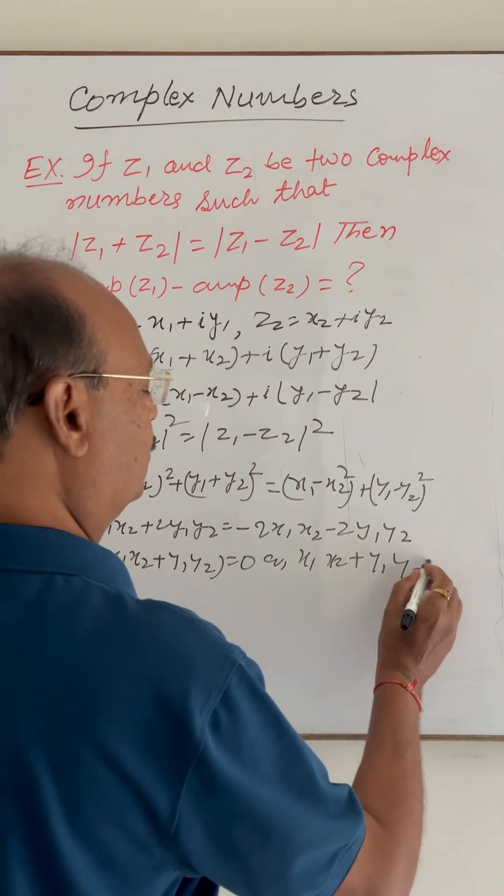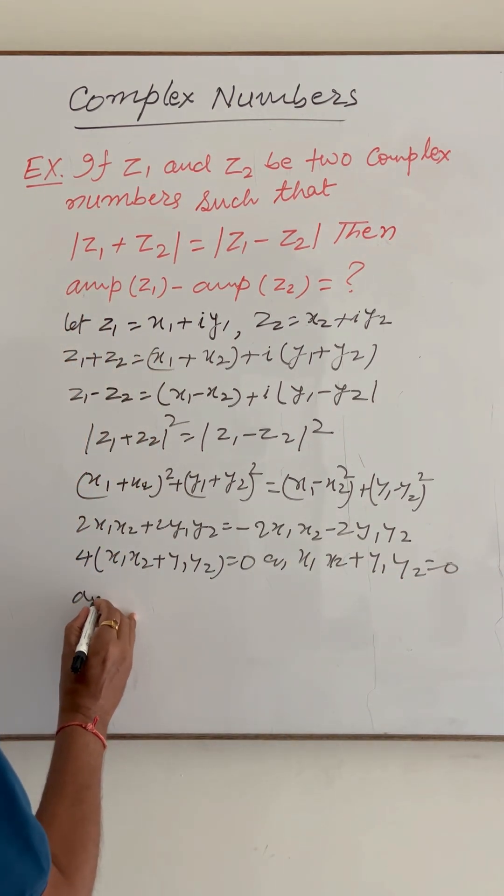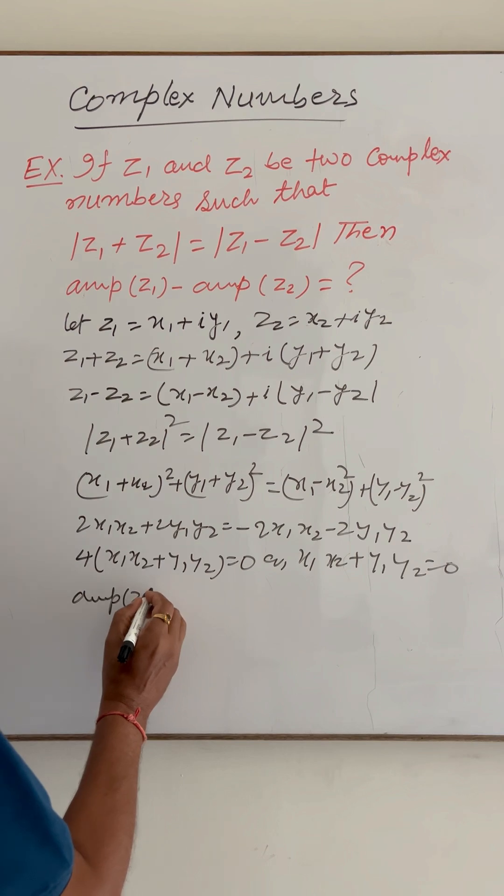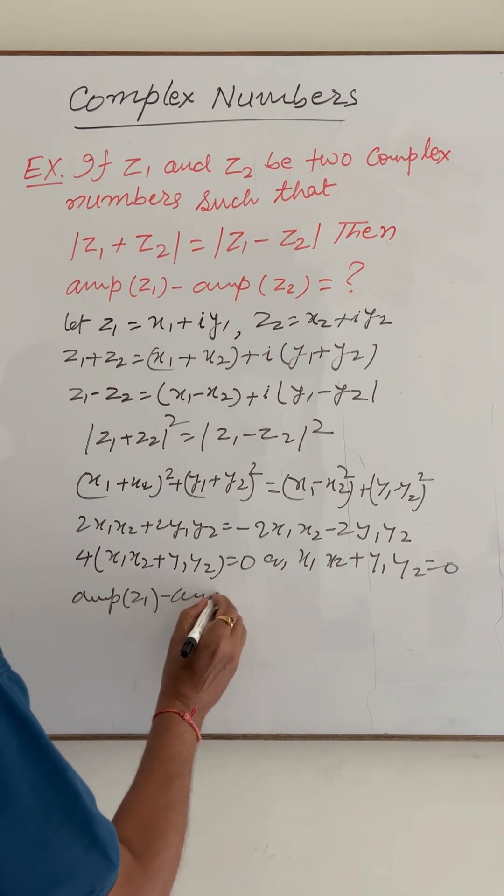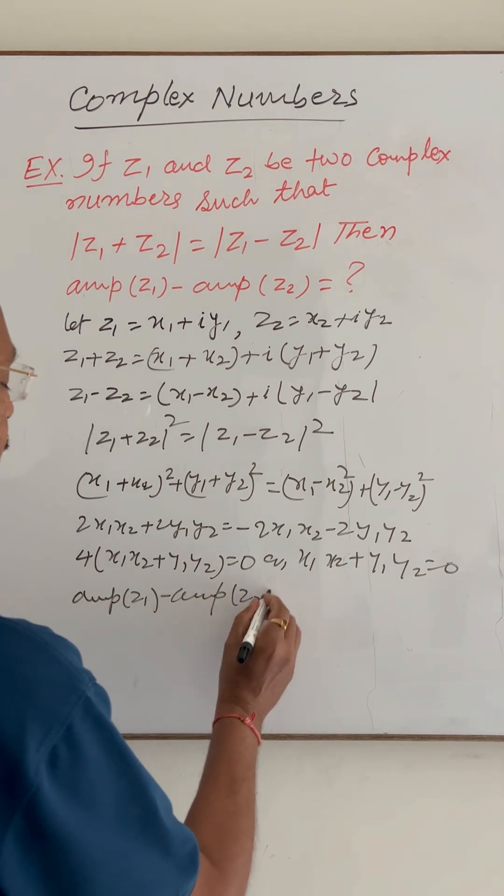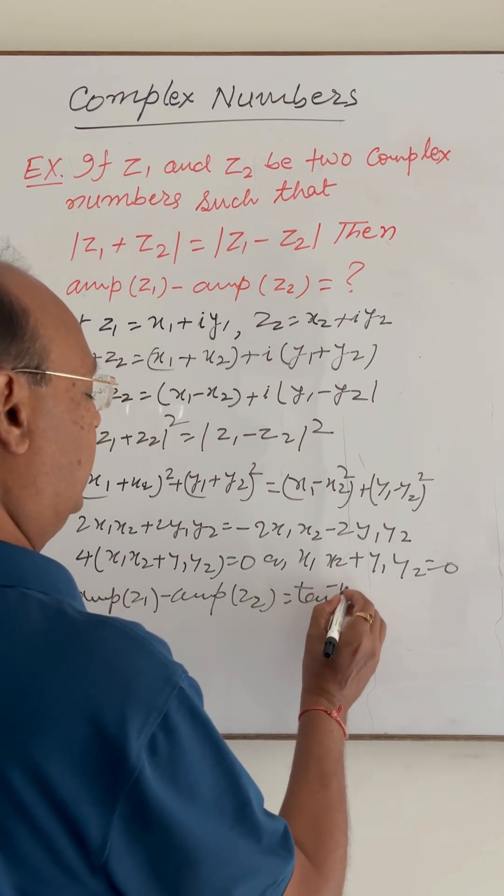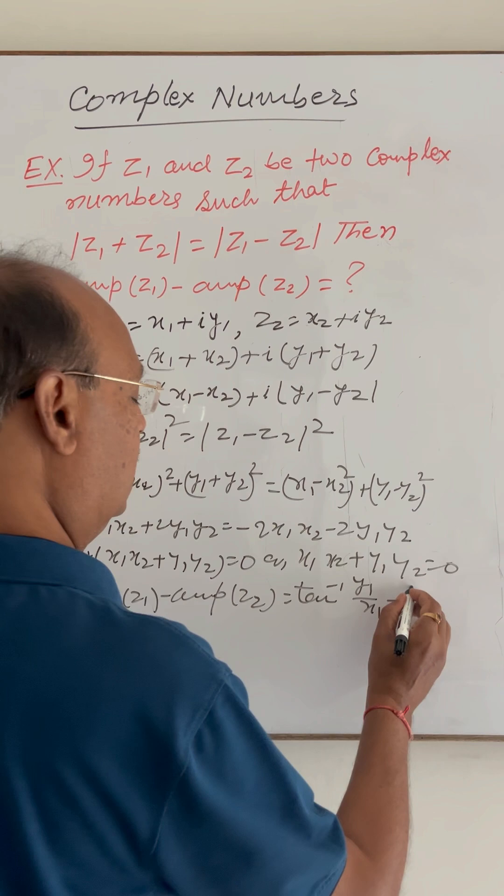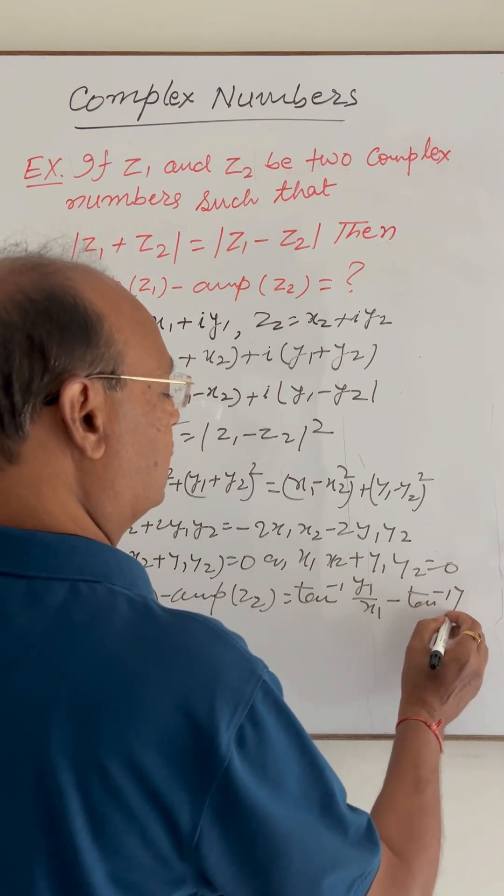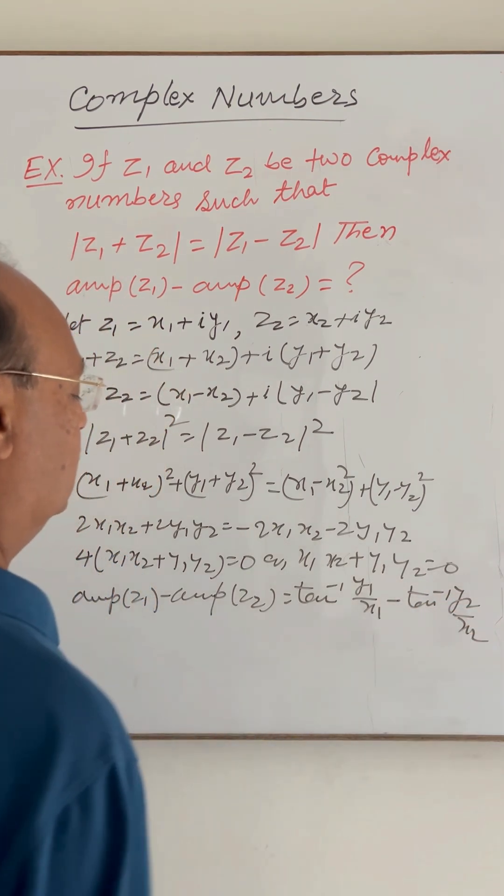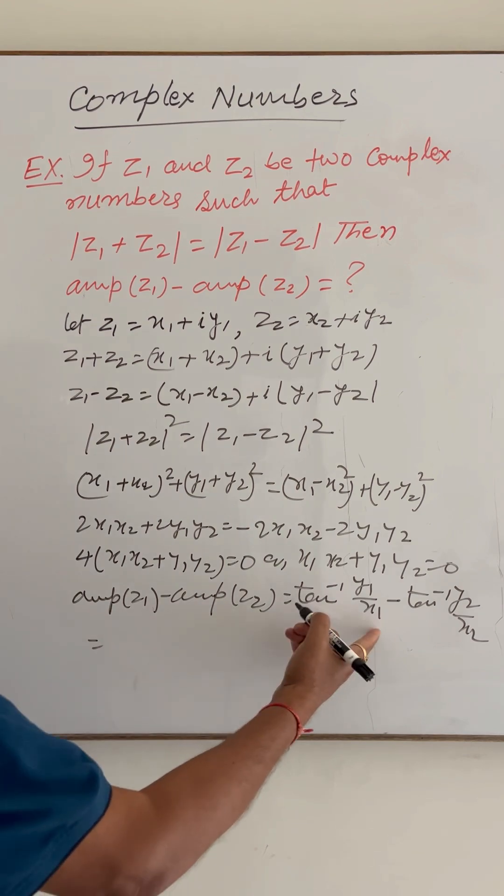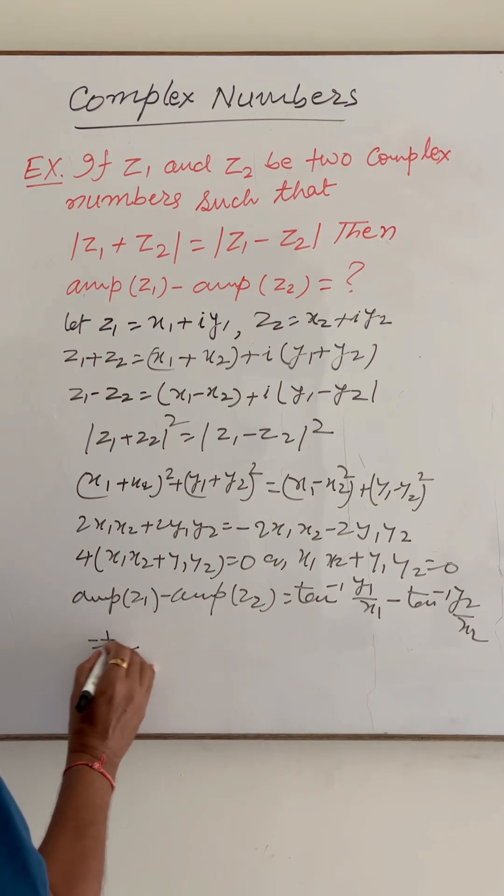Now let us find amplitude of z1 minus amplitude of z2. Using the formula, this is tan inverse of y1 by x1 minus tan inverse of y2 by x2, and this equals tan inverse of...